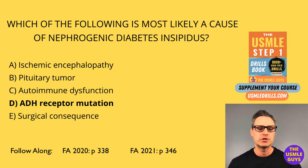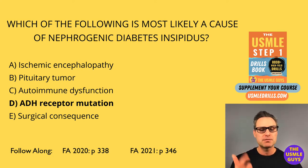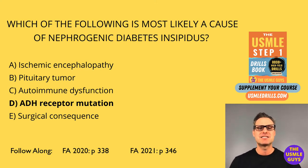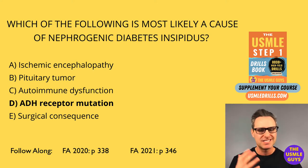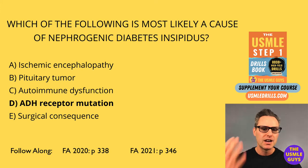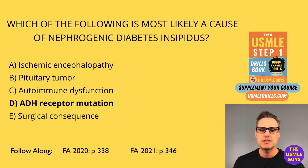So how do we treat these conditions? If the problem is central DI, we can treat with desmopressin and hydration. If the problem is linked to the kidneys, there's a list of drugs we can use: HCTZ, indomethacin, amiloride. We also need to keep them hydrated, restrict salt intake, and identify and if possible eliminate the underlying cause — for example, a pharmacologic trigger.